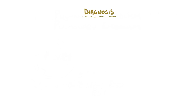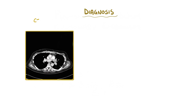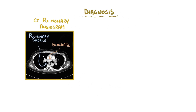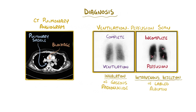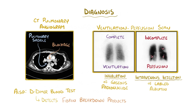The diagnosis of a pulmonary embolism can be done with a CT pulmonary angiogram, where a dye is injected into the blood vessels to identify blockages. Also a ventilation perfusion scan, sometimes called a VQ scan, can reveal areas of the lung that are ventilated but not perfused. Other helpful labs include a D-dimer blood test to detect fibrin breakdown products, which are usually present when there's a blood clot.